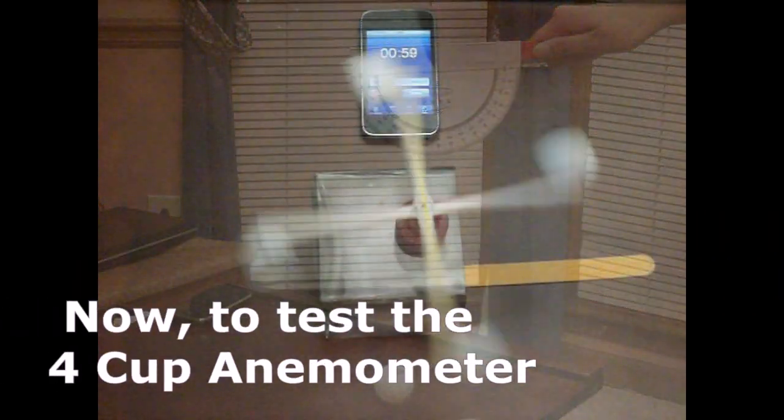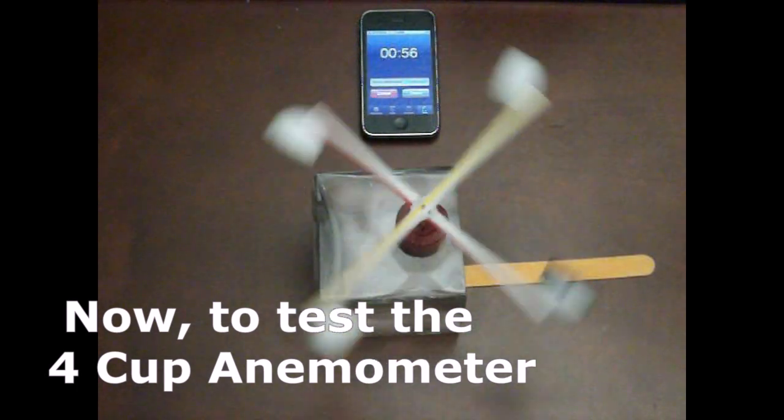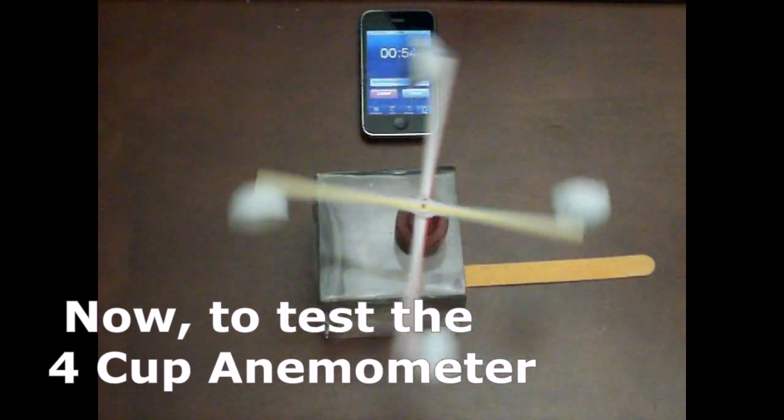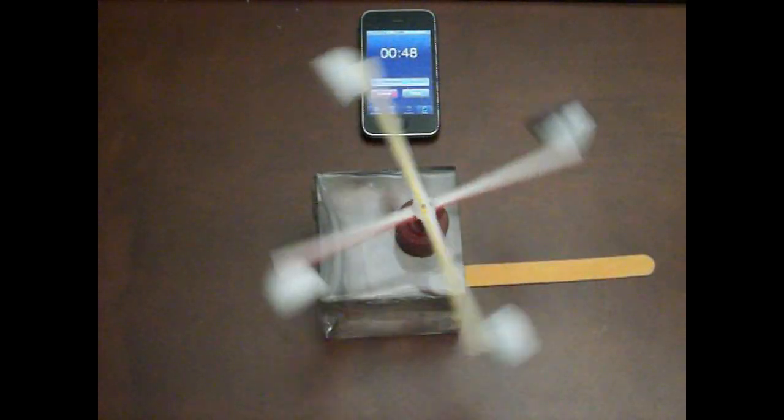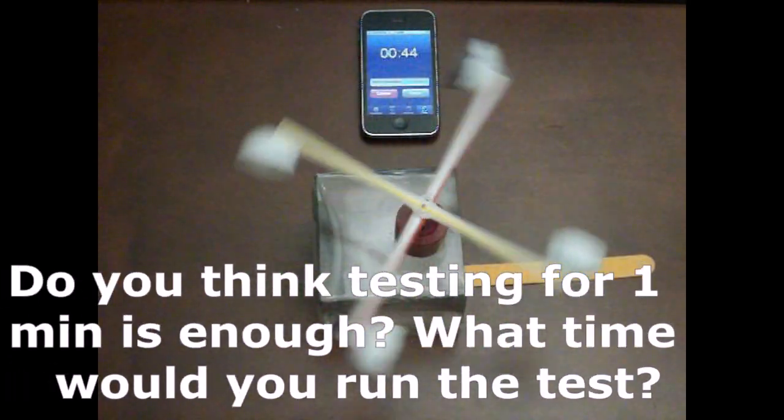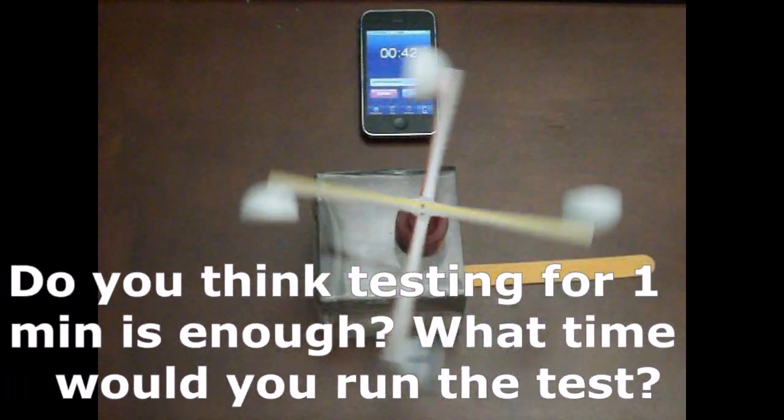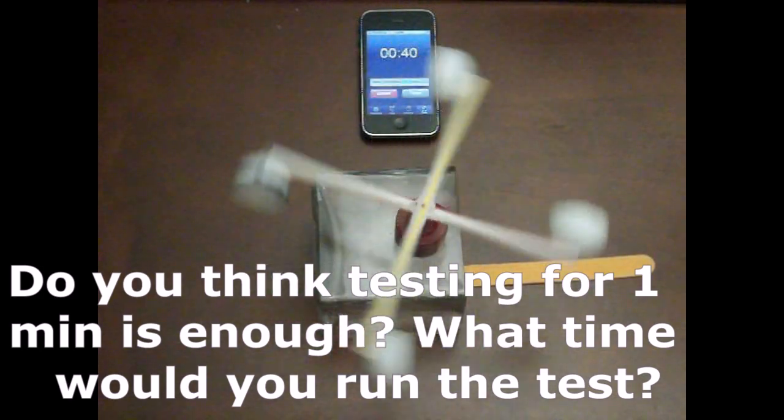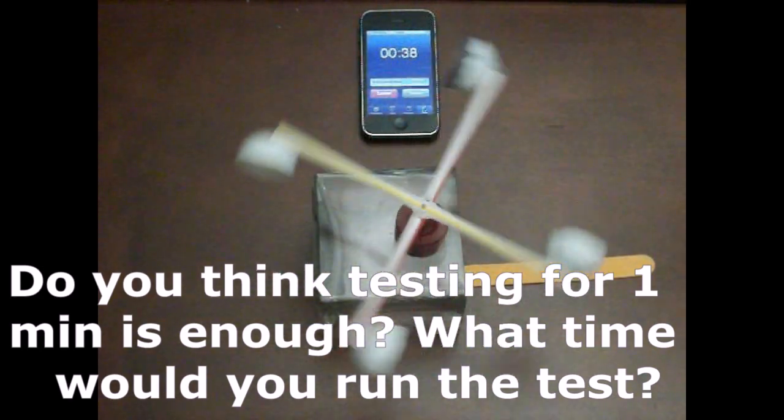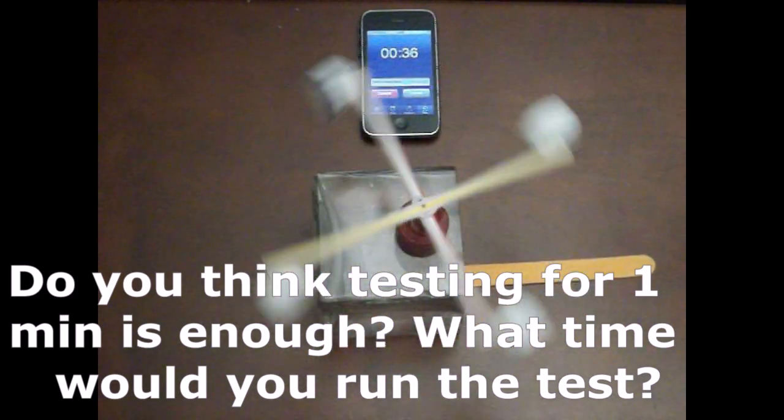We have set this timer, now as you can see, the clock is running to 1 minute and the fan is set to low speed. We will use the video to actually count the number of times the black cup passes over the popsicle stick.